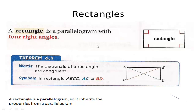Now we're going to talk about rectangles. The definition of a rectangle is that it's a parallelogram — specifically, a parallelogram that has four right angles. There's a right angle in each one of the corners. Notice that it says it's a parallelogram, so that means a rectangle will inherit all of the properties of a parallelogram.